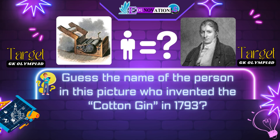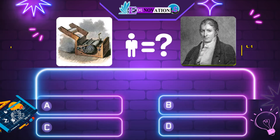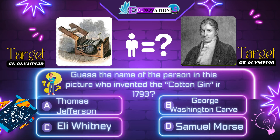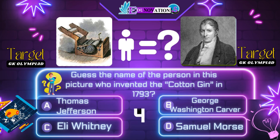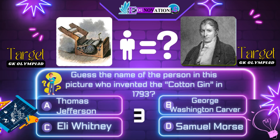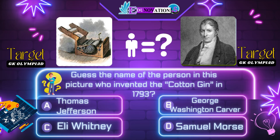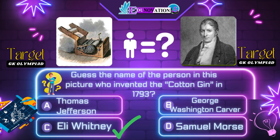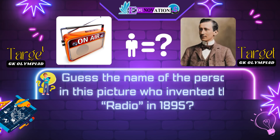Now next question. Guess the name of the person in this picture who invented the cotton gin in 1793. Your options are: A. Thomas Jefferson, B. George Washington Carver, C. Eli Whitney, D. Samuel Morse. Time's up. Correct answer is C. Eli Whitney.